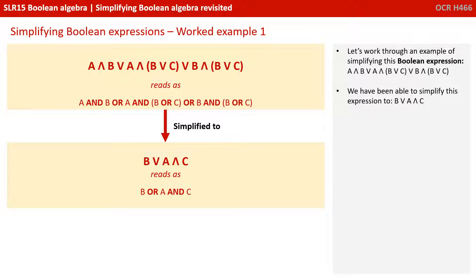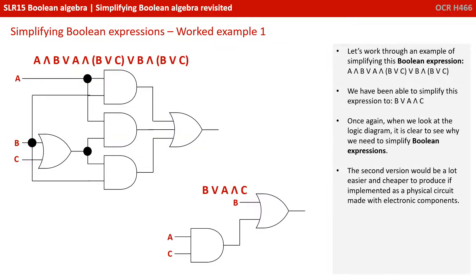We've been able to simplify this expression to B or A and C. Once again, when we look at the logic diagram, it is clear to see why we need to simplify Boolean expressions. The second version would be a lot easier and cheaper to produce if implemented as a physical circuit made with electronic components.